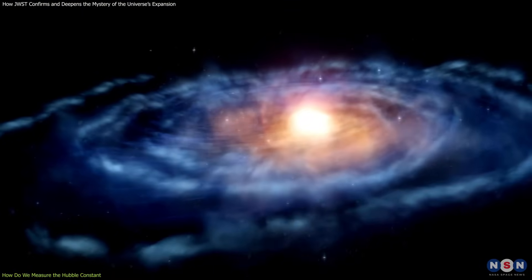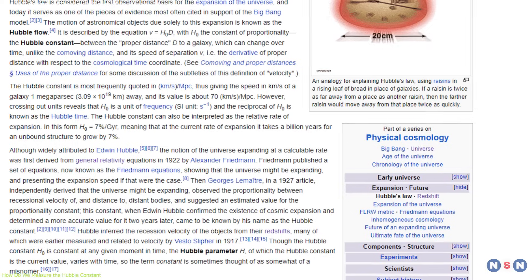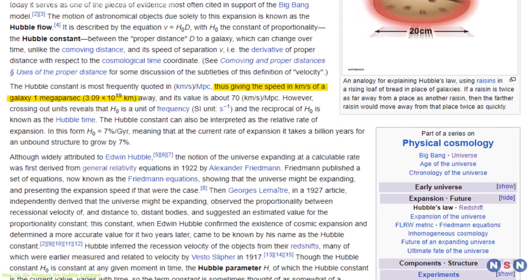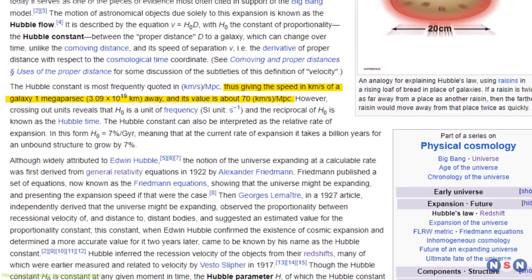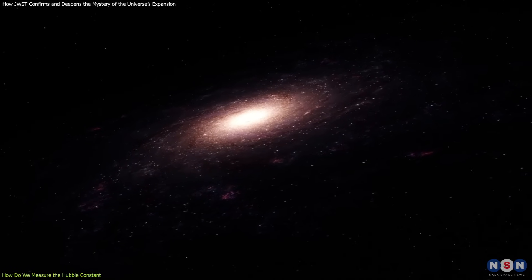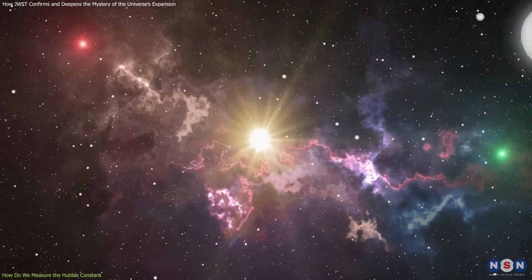For example, if the Hubble constant is 70 kilometers per second per megaparsec, it means that a galaxy that is one megaparsec away from us is moving away from us at 70 kilometers per second. But how do we know how far away a galaxy is? This is where things get tricky.